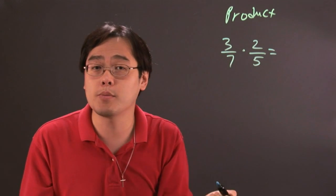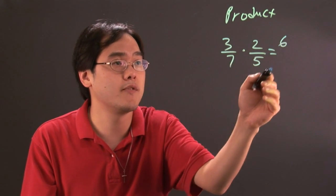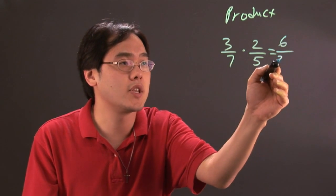So when it comes to multiplying fractions, you just multiply across the numerators and the denominators. 3 times 2 is going to give you 6, 7 times 5 is going to give you 35.